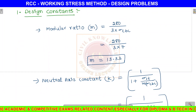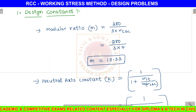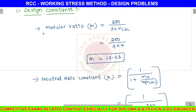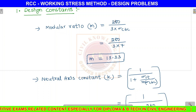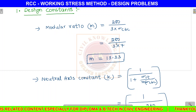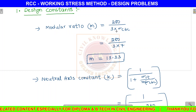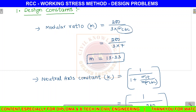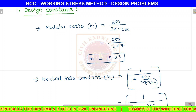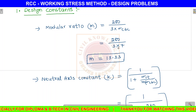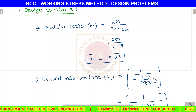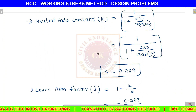First step: find the design constants. First, calculate the modular ratio M using the formula M = 280 / (3 × sigma CBC). For M20 concrete with sigma CBC = 7 N/mm², substituting: M = 280 / (3 × 7) = 13.33.